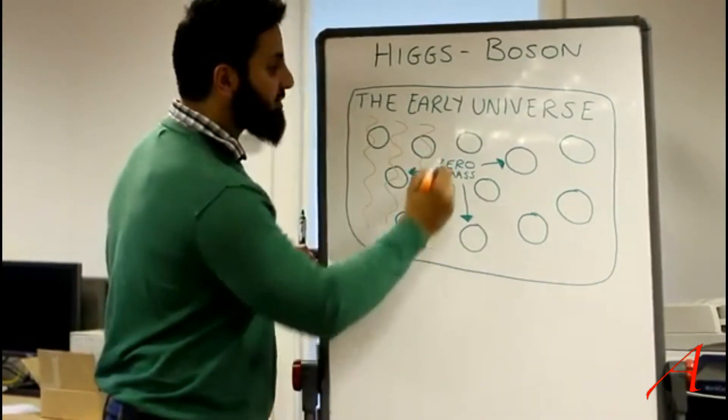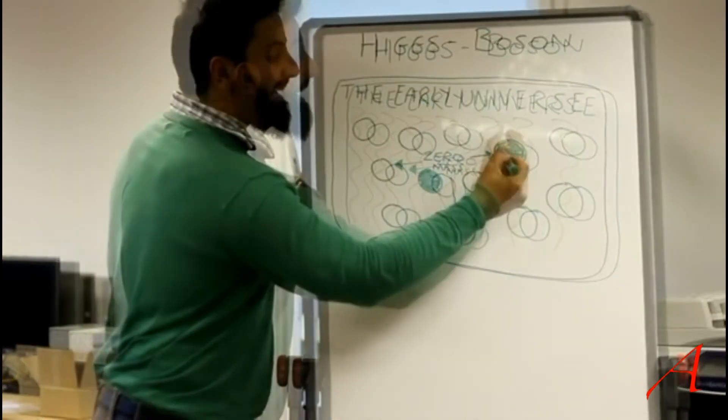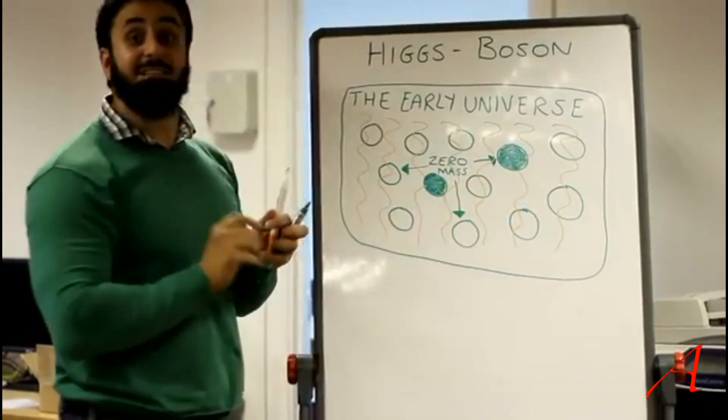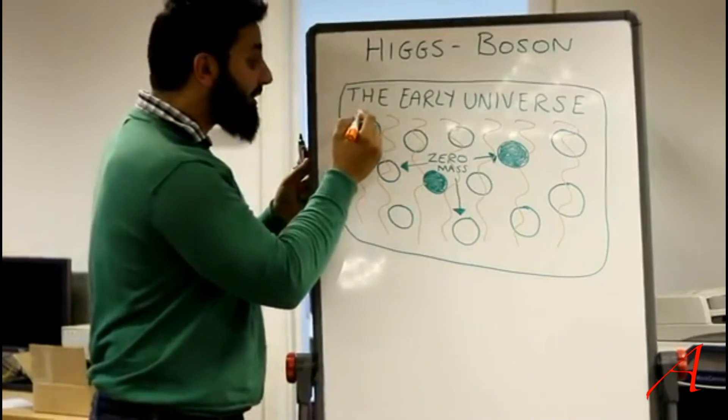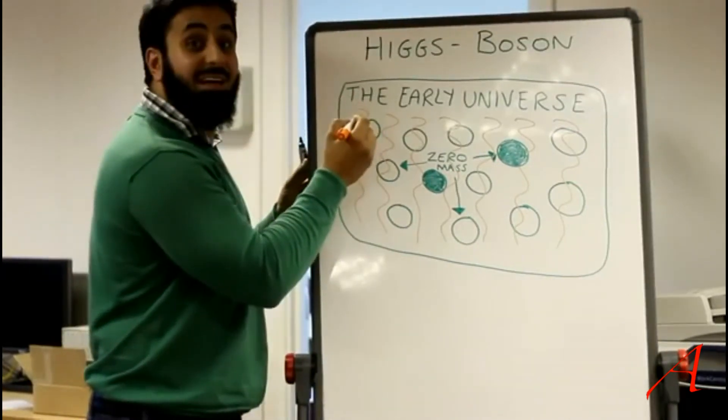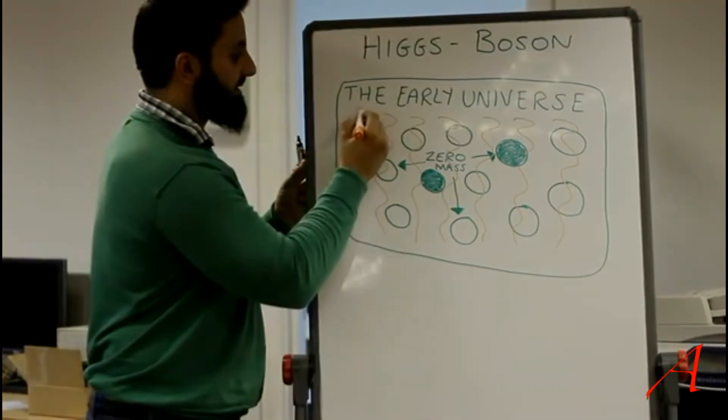So now the Higgs field is switched on. Now, where does the Higgs boson come into play? Well, the Higgs boson is the particle that makes up the Higgs field. Oh, goodness, no, it is not the Higgs boson which makes up the Higgs field, or what is responsible for the Higgs mechanism. He is completely clueless.